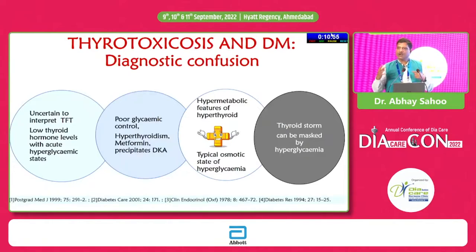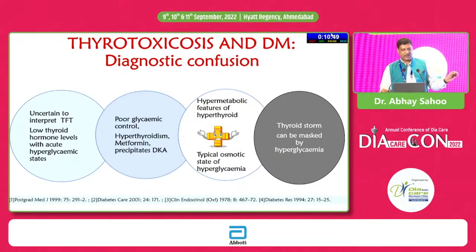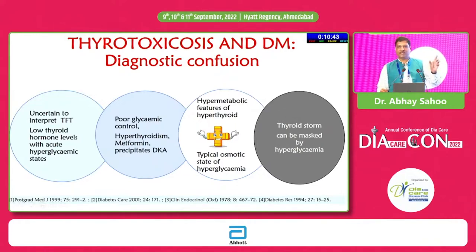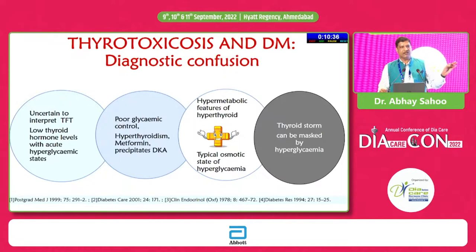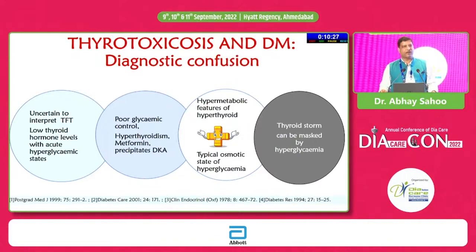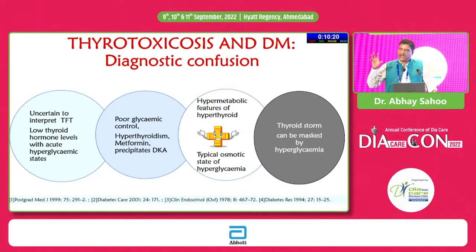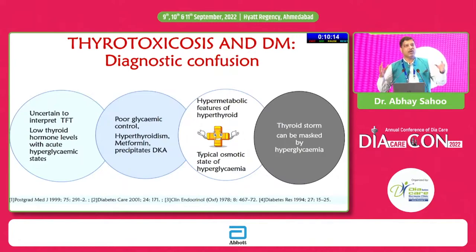When thyrotoxicosis and diabetes coexist, there are diagnostic challenges: it is uncertain how to interpret thyroid function tests due to low thyroid hormone levels from acute hyperglycemic states mimicking sick euthyroid syndrome. Poor glycemic control and hyperthyroidism can precipitate diabetic ketosis. Hypermetabolic features of thyrotoxicosis overlap with osmotic features of hyperglycemia, and thyroid storm can be masked by acute severe hyperglycemia.